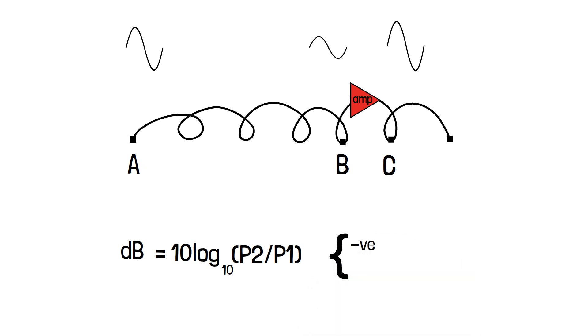If the decibel value is negative, then the signal is attenuated. If the decibel value is positive, then the signal is amplified.